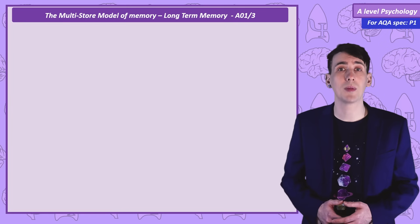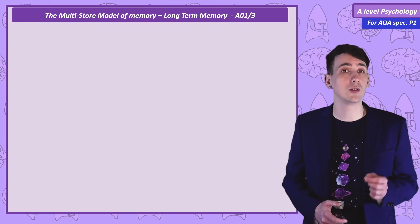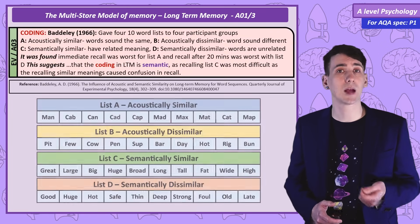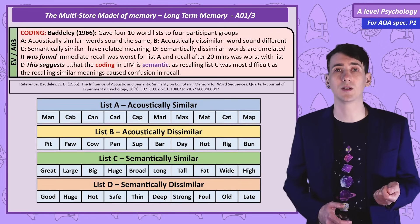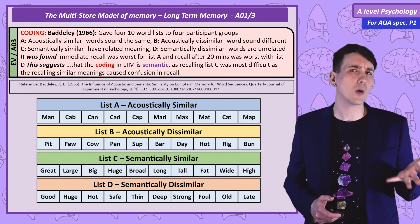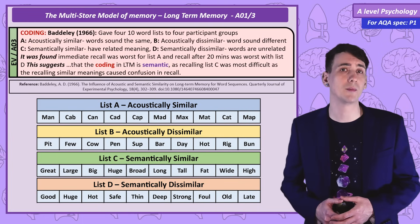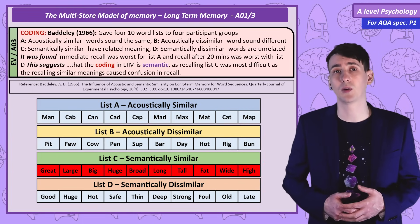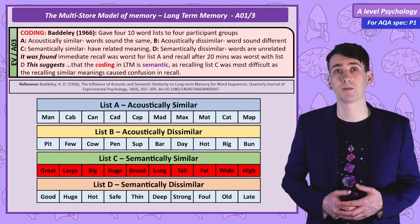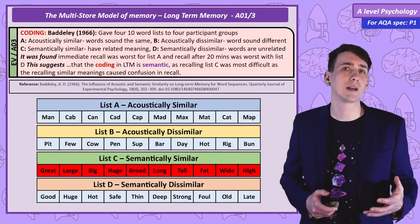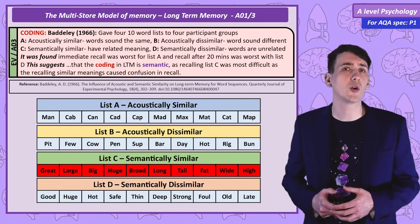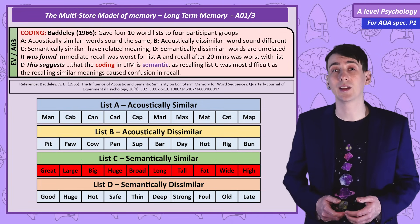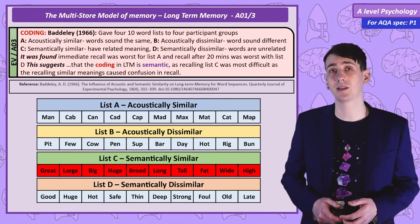Moving on to long-term memory, we can use the same Baddeley study again. Recall after 20 minutes — testing long-term memory — was worst for the list of semantically similar words. This semantic similarity caused confusion, suggesting that long-term memory is coded semantically.